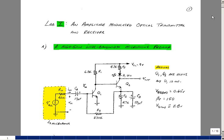Lab number 10 is entitled An Amplitude Modulated Optical Transmitter and Receiver. What we're going to make in this lab is a high gain amplifier which will hook up to a microphone, and we'll take your voice and convert it into a light signal.